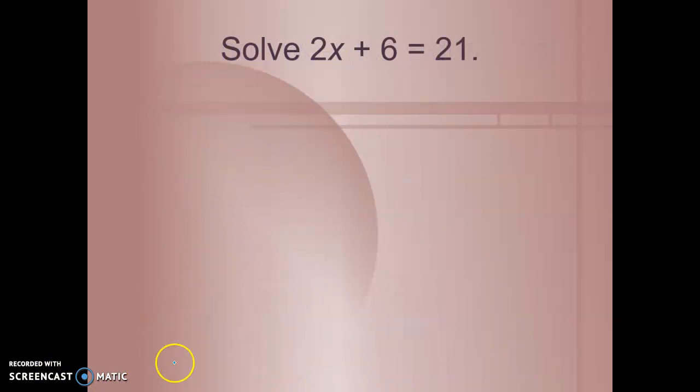So let's look at solving 2x plus 6 equals 21. When we take a look at the variable, we see that what's being done to it is that it's being multiplied by 2 and it has 6 added to it. The first thing that we want to do in reverse order is get rid of that 6. We want to get the 2x by itself. Well, to get rid of a positive 6, we've got to use a negative 6. So 6 minus 6, this will cancel out.